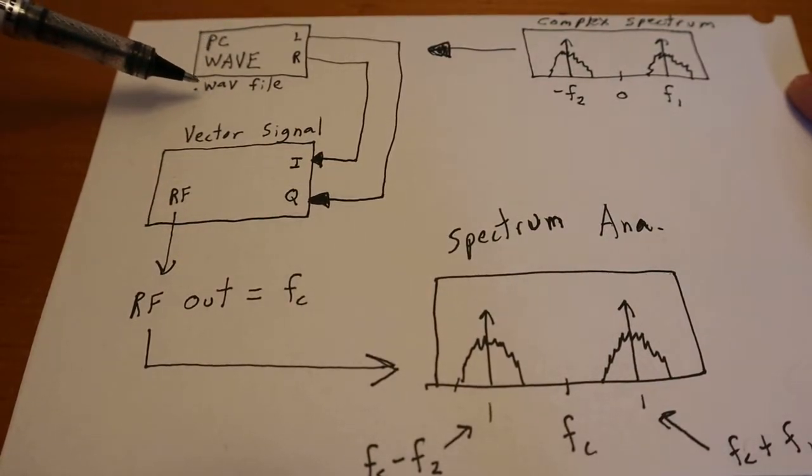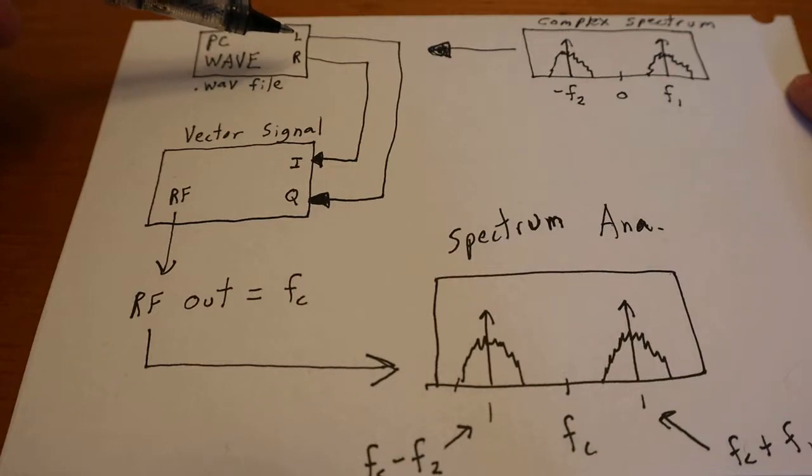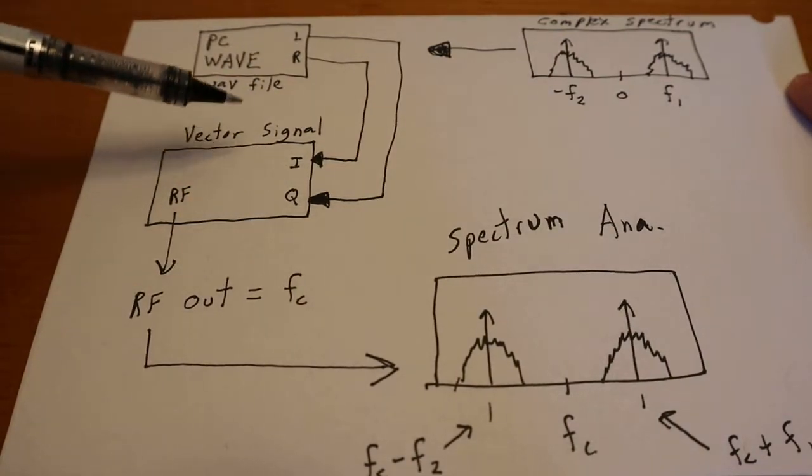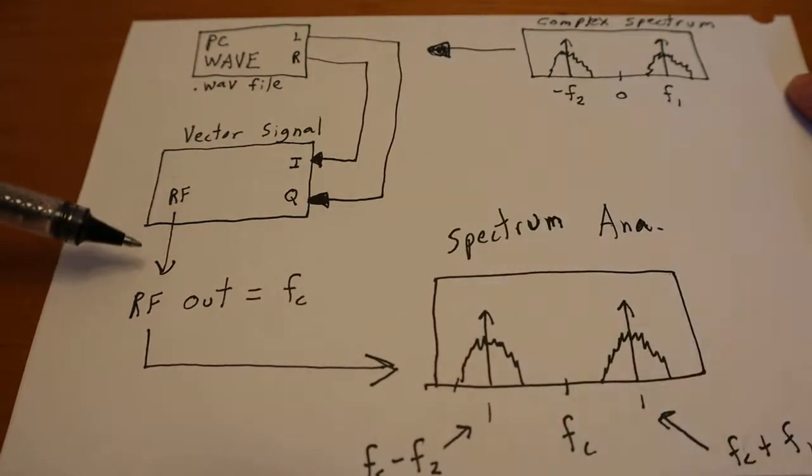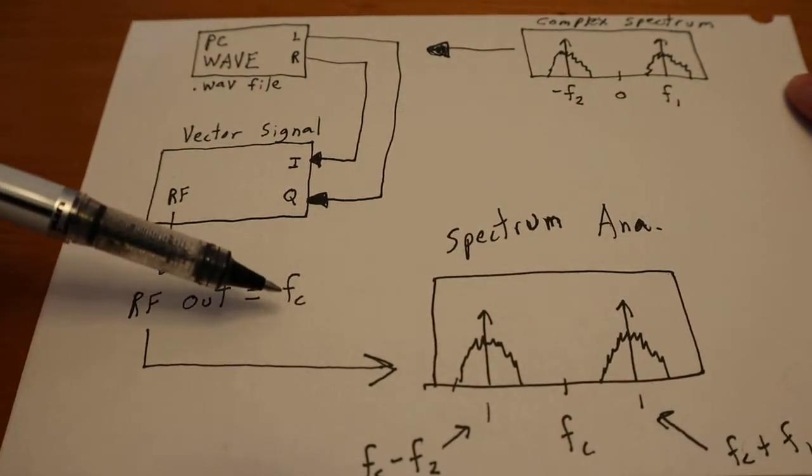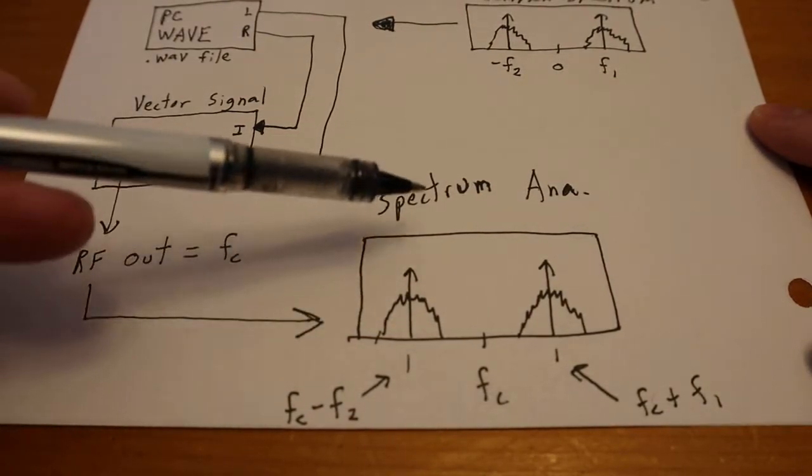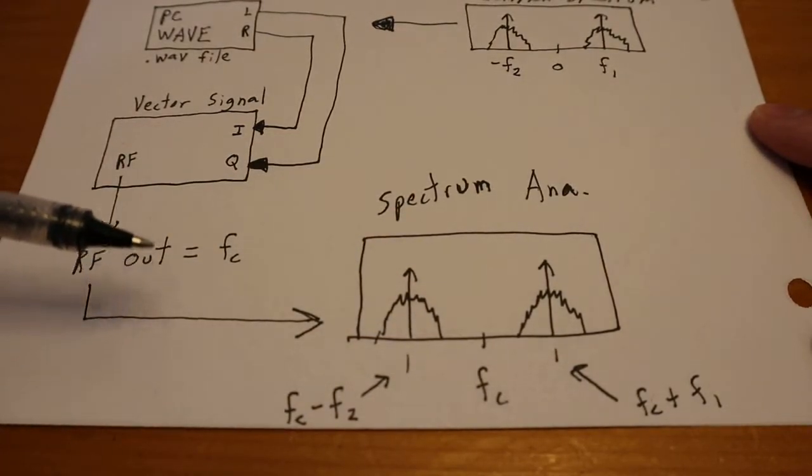So again, we have the computer playing the WAV file. The left and right channels are going into the I and Q, the vector signal generator. You have the RF out, centered at some carrier. And this would be the spectrum that you would see if you were to hook it up to a spectrum analyzer or SDR radio.